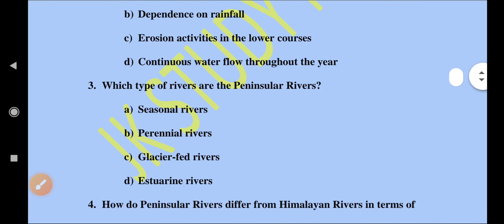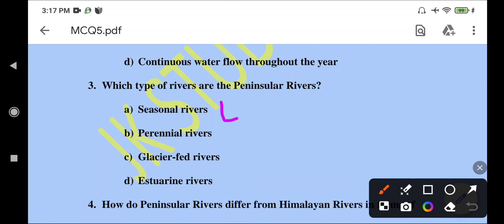Which type of rivers are the Peninsular rivers? Can it be seasonal rivers, perennial rivers, or glacier-fed rivers? The Peninsular rivers are mostly seasonal rivers. The water does not flow throughout the year; it flows only in a particular season — the rainy season. So the answer is option A, that is seasonal rivers.